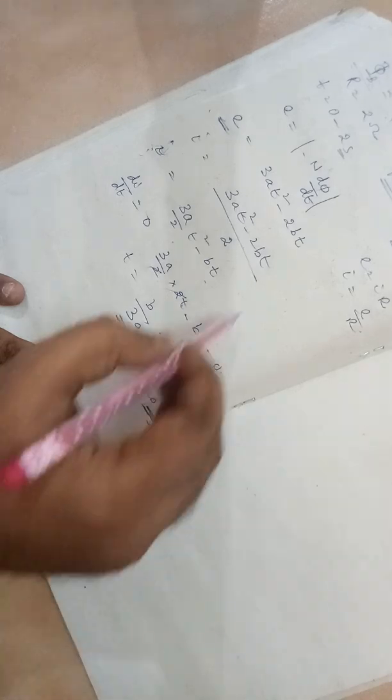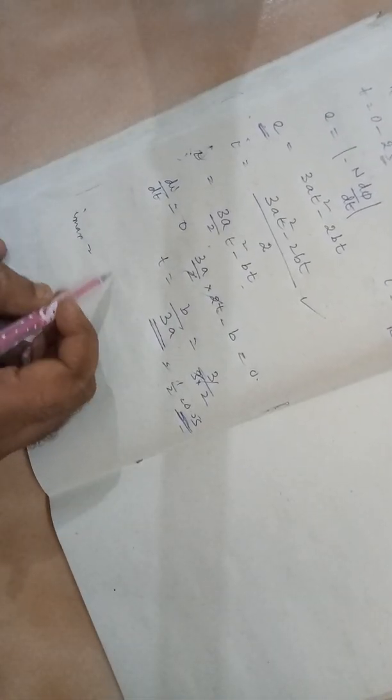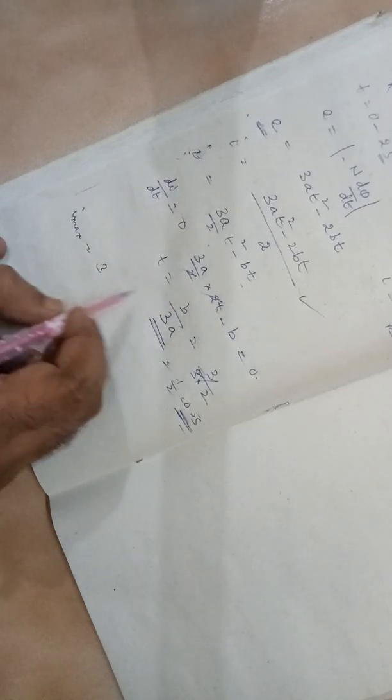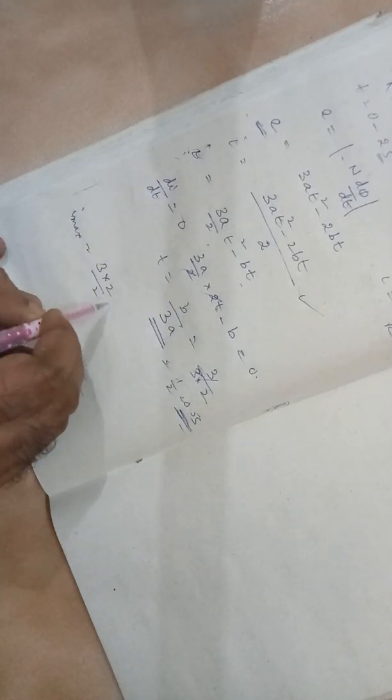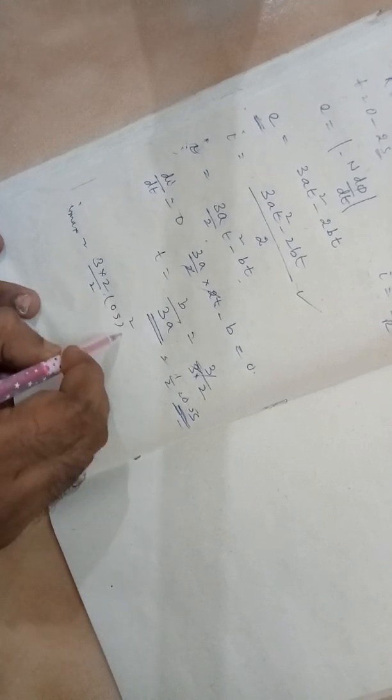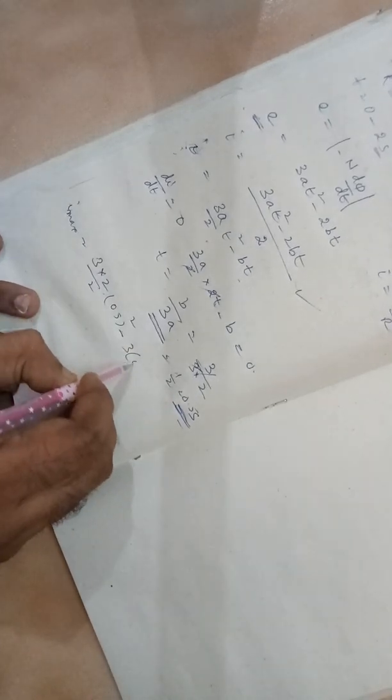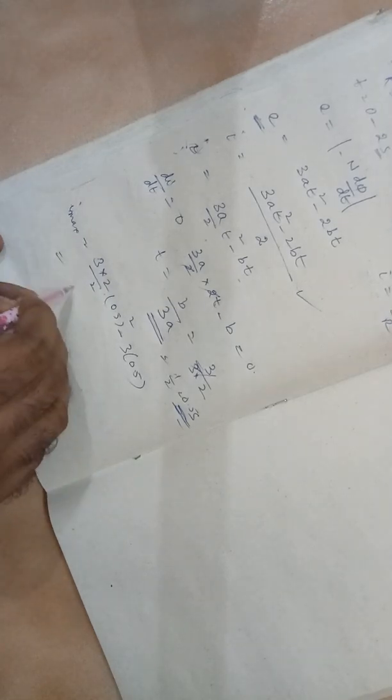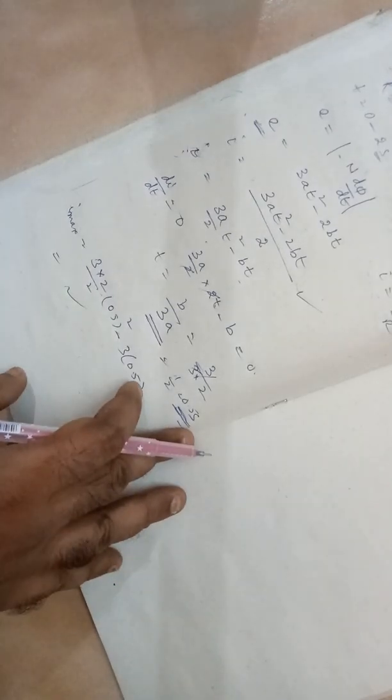And what will be the magnitude? You have to put 0.5 in this. So the I maximum will be equal to 3 into A, A is 2, 2 by 2, t square: 0.5 square minus 3 into 0.5. Whatever you get, that is your answer.